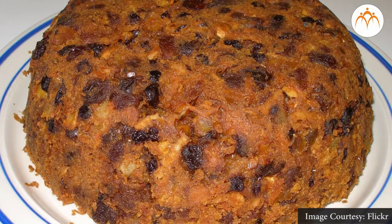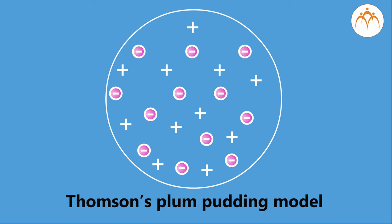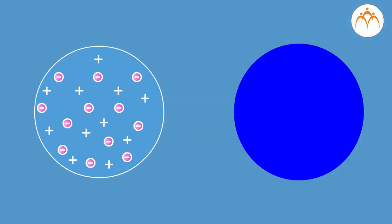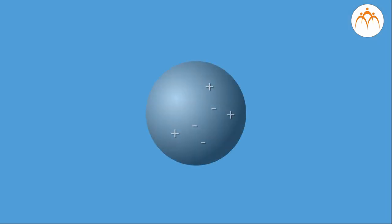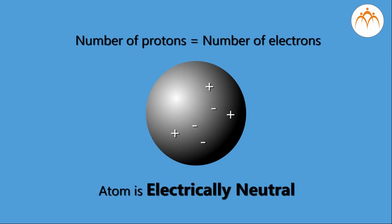Sir J.J. Thomson in 1904 put forth his plum pudding model of an atom. To balance the negative charge, he thought of positive charge being distributed throughout the atom, with electrons embedded in it like plums in a pudding. He named the positively charged particles protons. Thomson's plum pudding model has an internal structure, unlike Dalton's atomic model. Equal numbers of protons and electrons balance each other to make the atom neutral.